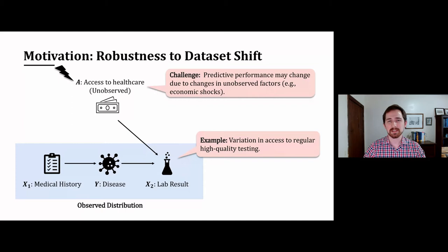A challenge is that if there is a change in the distribution of this variable, then that may cause a degradation in the performance of our models. In this example, if there is a large change in the distribution of A, then it may cause models that depend too heavily on laboratory testing to perform poorly.